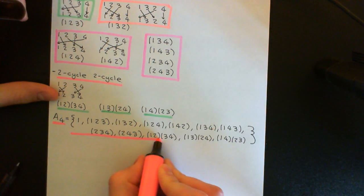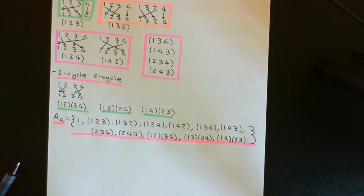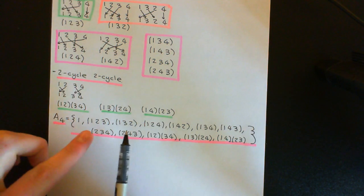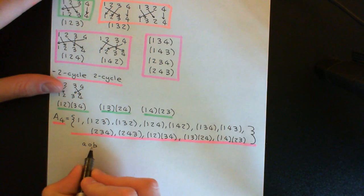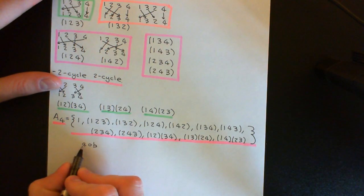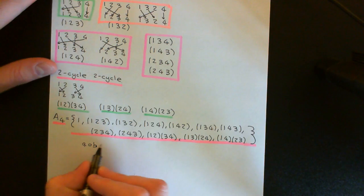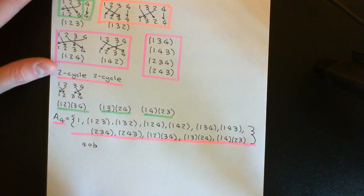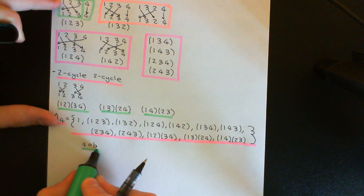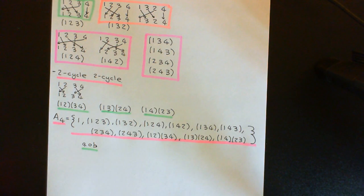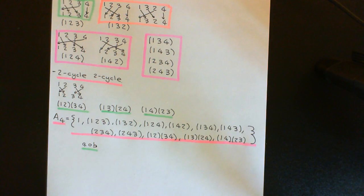In principle you could work out the composition table for this, though I will not do so since it has 144 entries. To compose two elements A and B, you firstly act B on the set {1,2,3,4}, then act A on the result, and take the net mapping — that will still be an even permutation and will be something back in A4. So there's our study of the alternating group on the set of four elements, which is an example of a group of order 12. We'll have a break here, and in the next video we'll begin the proof of Theorem 1.